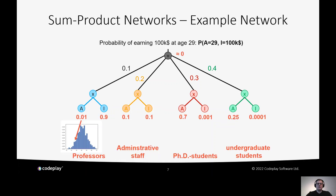After obtaining this graph, we can now try to answer queries — like: what's the probability of earning $100,000 at the age of 29? We start at the leaf nodes and query for the age of professors being 29, which gives a low probability. At the same time, the probability of a professor earning $100,000 is quite high. We do the same for all leaf nodes, multiply the values by the weight, and sum them up to find our final probability — close to zero in this case. These are sum-product networks.